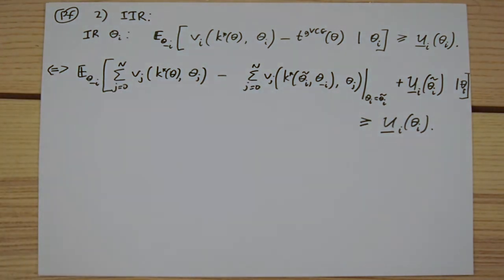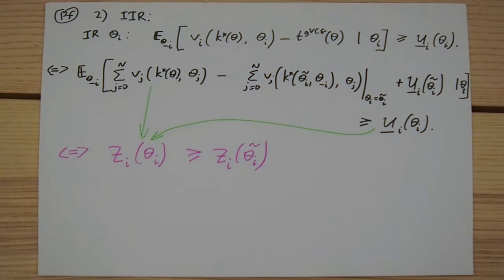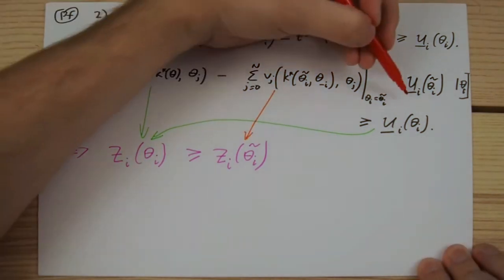Note that this inequality can be rewritten in terms of function z that we introduced while we were introducing the least charitable type. In particular, function z calculated the expected social welfare given type theta_i of player i minus the outside option of this player.